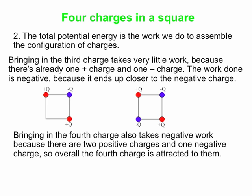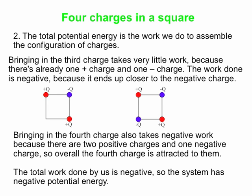When we add up all the negative work done in each step, we get a total negative amount of work overall. The work done assembling the system equals the potential energy of the system — so we did negative work, and the system has negative potential energy. These are two equivalent ways to look at it: pair up all charges and sum the interaction energies, or consider the total work done to assemble the system.